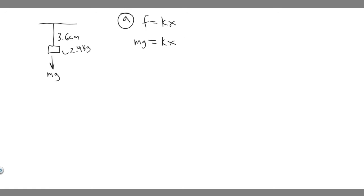Before we plug in the variables, we need to make sure that 3.6 centimeters is converted into meters, because we want K to be in Newtons per meter. So 3.6 centimeters — since there are 100 centimeters per meter, we divide by 100 — gives us 0.036 meters. Now we have it in meters and can go ahead and solve.